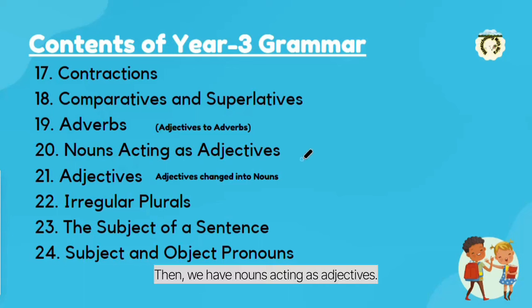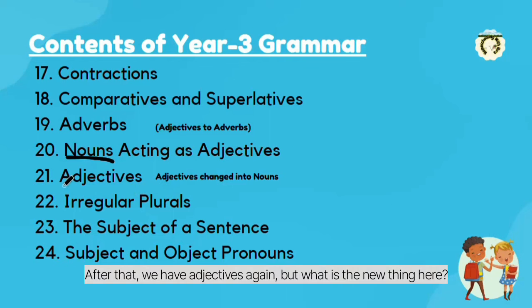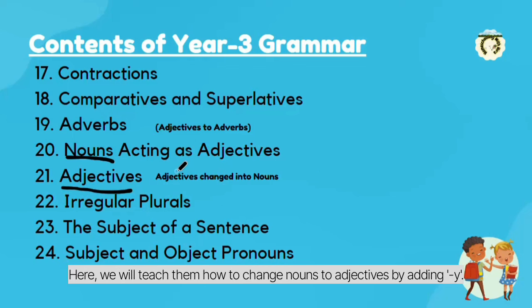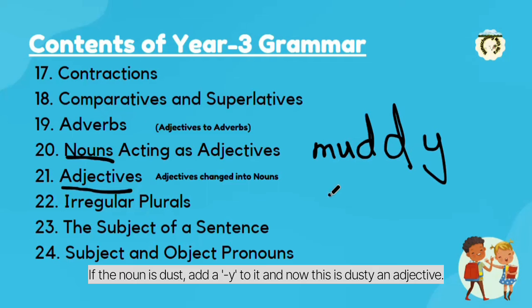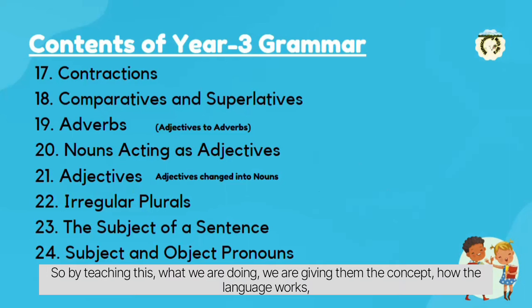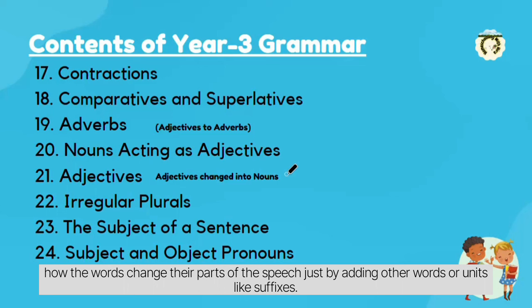Then we have nouns acting as adjectives — sometimes nouns act as adjectives and here we will teach them this. After that, we have adjectives again but with a new concept: how kids can change nouns to adjectives by adding '-y' to them. For example, if the word is 'mud', add a '-y' and it becomes 'muddy'. If the noun is 'dust', add a '-y' and it becomes 'dusty', an adjective. By teaching this, we give them the concept of how language works and how words change their parts of speech through suffixes.